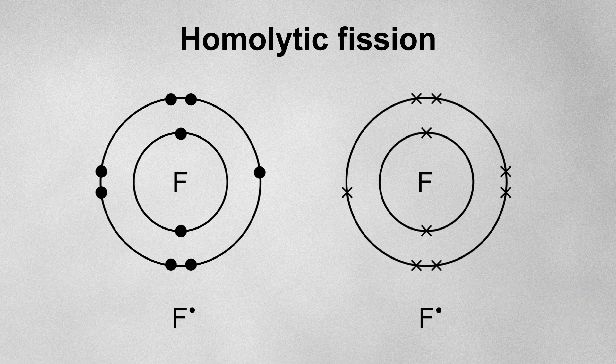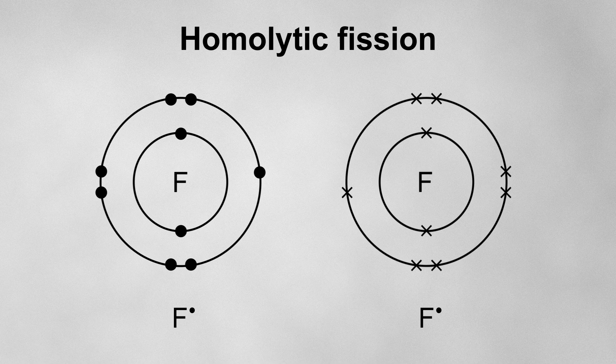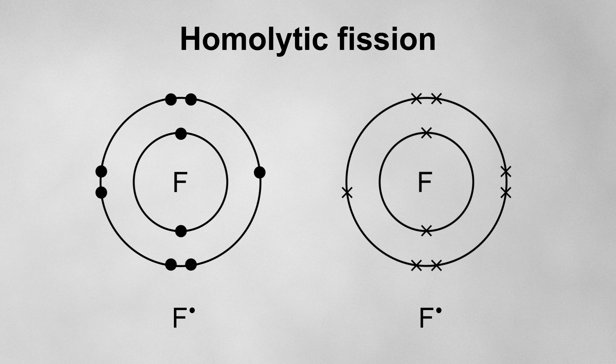Free radicals are highly reactive, because they still want a full outer shell. So they'll rip an atom off of the first molecule they come across in order to obtain this. We'll go into this more when we look at the mechanism for UV-initiated free radical substitution. But for now, just remember that a curly half-arrow shows the movement of a single electron and is used when free radicals are involved.